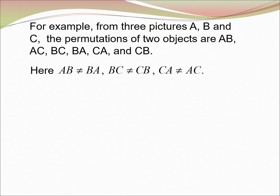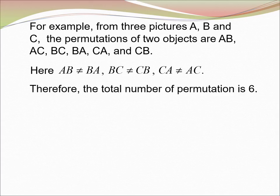Here, AB ≠ BA, BC ≠ CB, and CA ≠ AC. Therefore, the total number of permutation is 6.